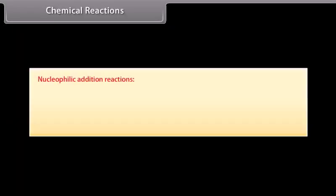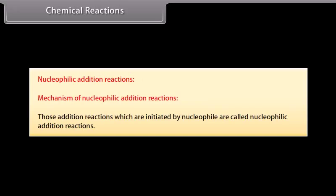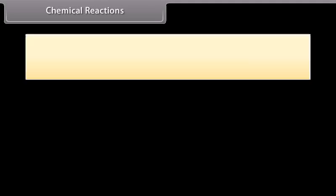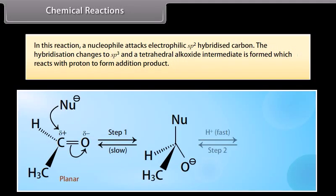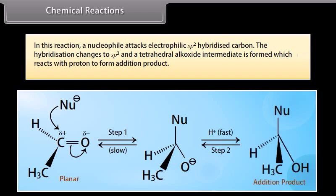Nucleophilic addition reactions. Those addition reactions which are initiated by a nucleophile are called nucleophilic addition reactions. In this reaction, a nucleophile attacks the electrophilic sp2 hybridized carbon. The hybridization changes to sp3 and a tetrahedral alkoxide intermediate is formed, which reacts with a proton to form the addition product.